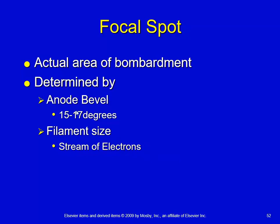We also have an anode bevel, which generally runs from 15 to 17 degrees — so it's very vertical. The bevel itself is at an angulation on the face of the anode. Generally, the smaller the number, the more steep it is, and the smaller your focal spot is going to be.